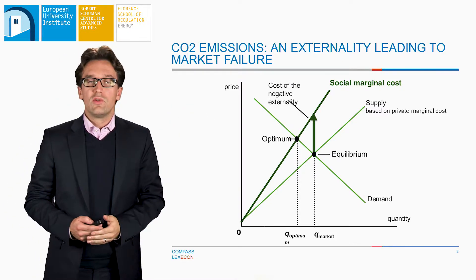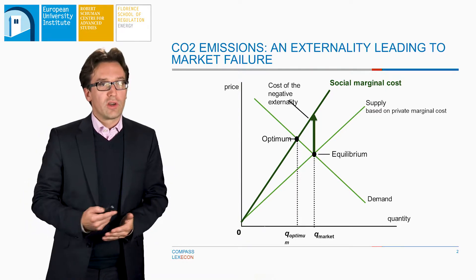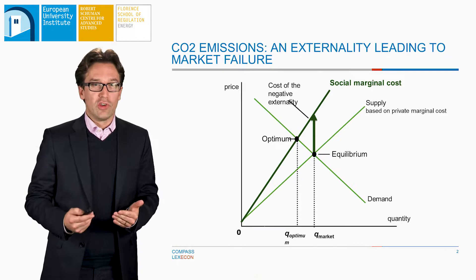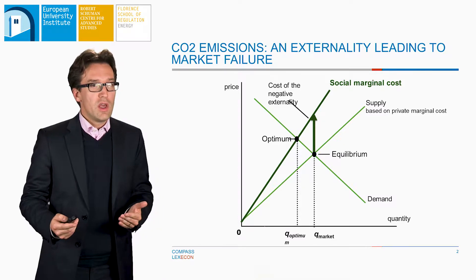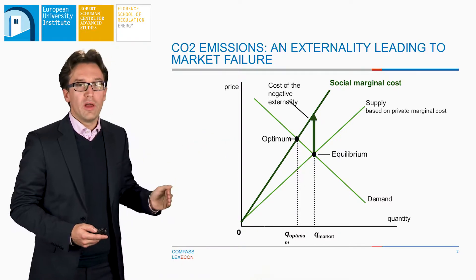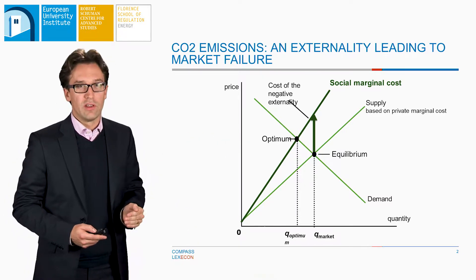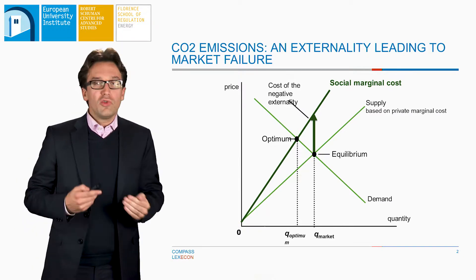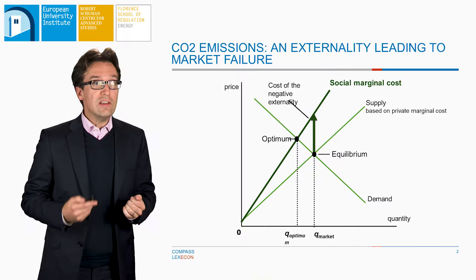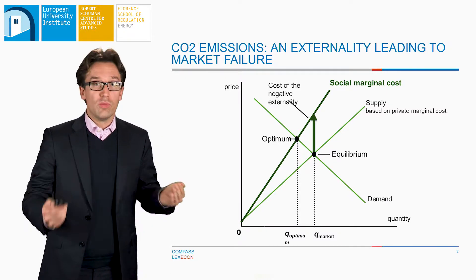You see that this leads to a different market equilibrium. If we were to take into account the real cost — meaning the social cost of production associated with this power plant — we would actually have a reduced production. Q optimum, as you see, is reduced compared to Q market. Now how do we deal with that issue? The fact that we have an externality leads us to produce too much of that good and of course emit too much CO2.